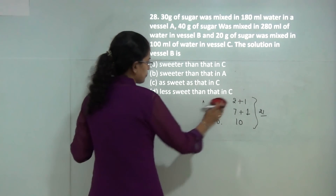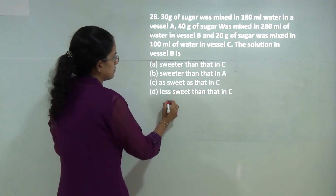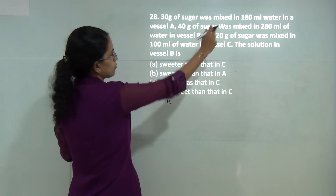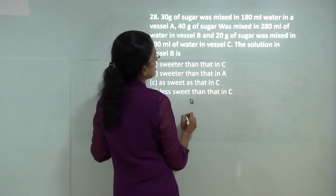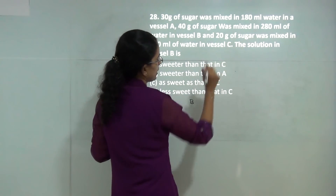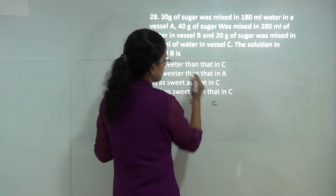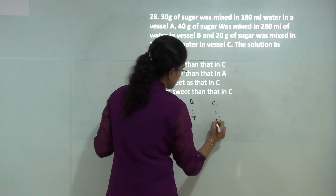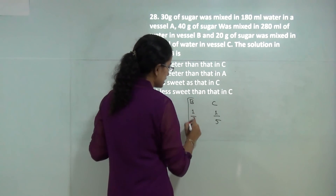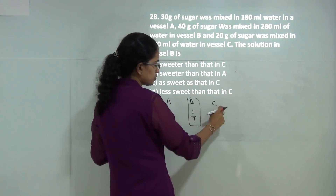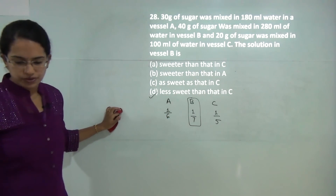In this question you have to find the concentration in grams per milliliter. In vessel A it would be 30 by 180, which is 1/6. In vessel B it would be 40 by 280, which is 1/7. In vessel C it would be 20 by 100, which is 1/5. So vessel B is the most dilute and is less sweet than both A and C. The correct answer is that it is less sweet than C.